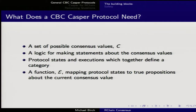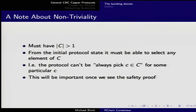You can get consensus on any data structure using one of these protocols. What do you need? There's the thing you're getting consensus on — a value in set C. There's a way of talking about the values: logic propositions about those values. There are the protocol states and how you move between those states, giving you a category, and a function E for estimate that maps protocol states to true propositions about the current consensus value in C.